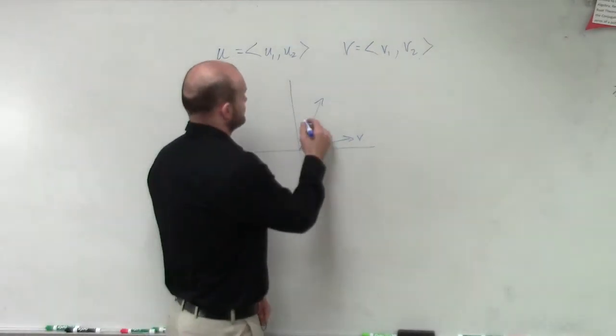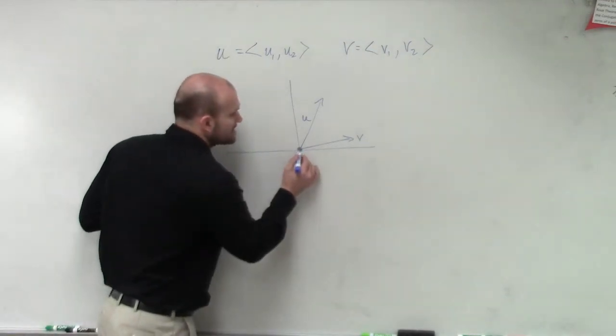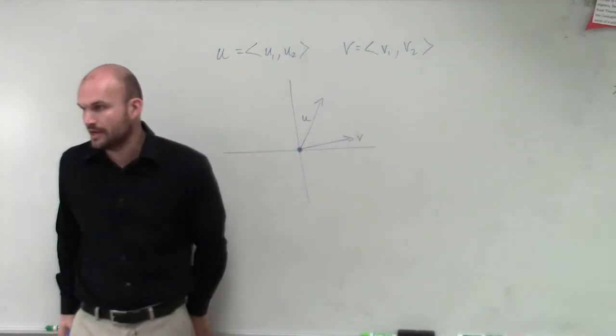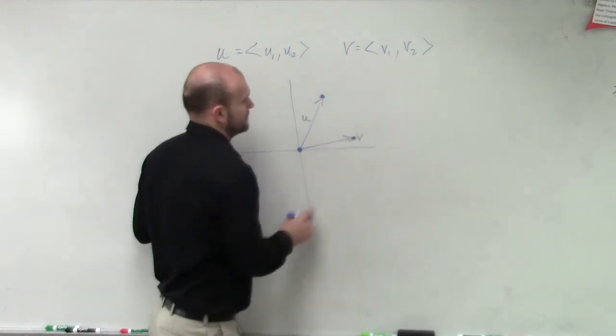And that's u. Now, we don't really need to know exactly what they are, but we know they're in their component form because they have an initial point at 0,0, right? Then they have our two terminal points.